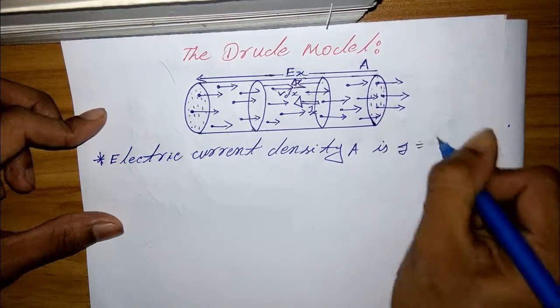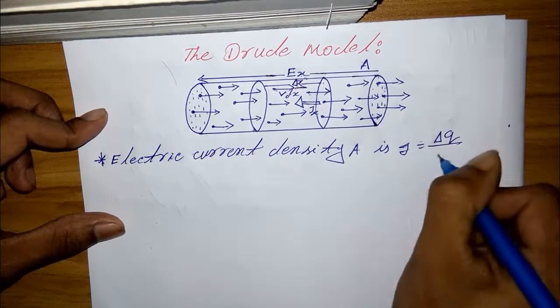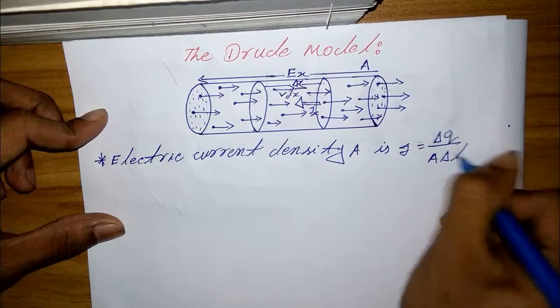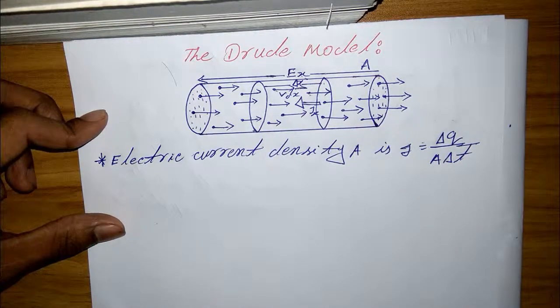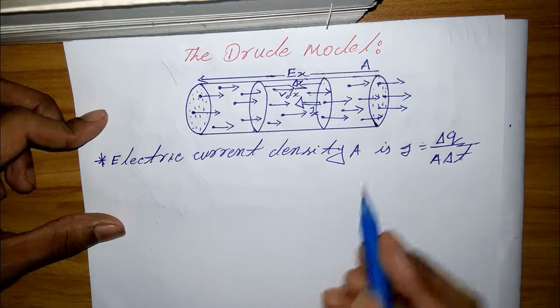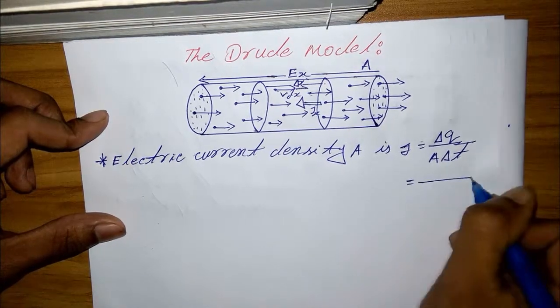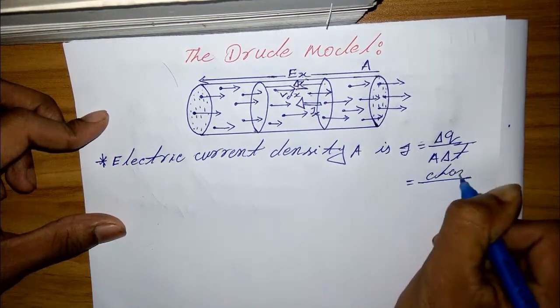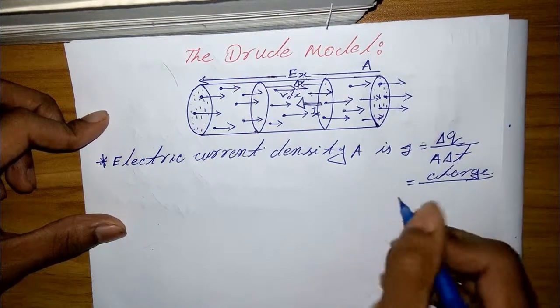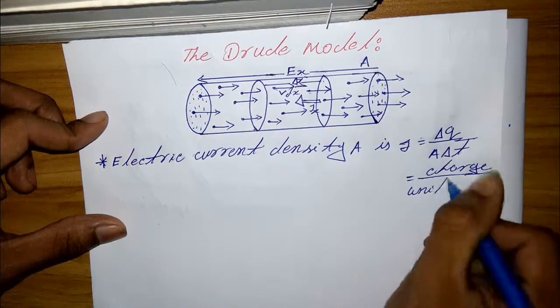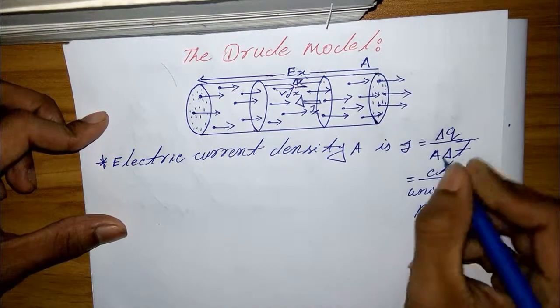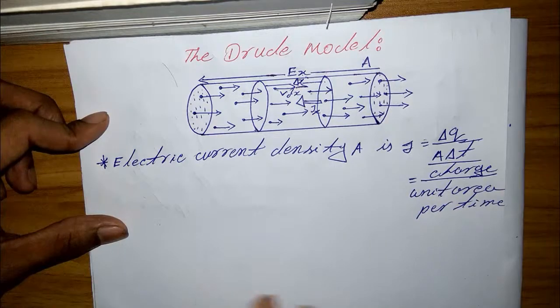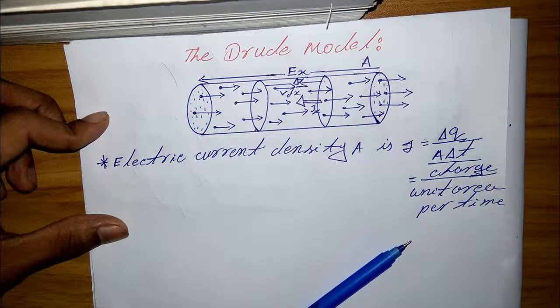j equals del q by a del t. Here is the charge by unit area per time, so you can write this as charge by unit area per time. That's the current density.